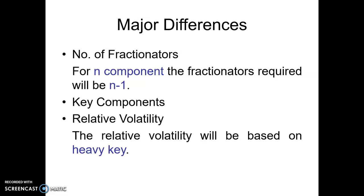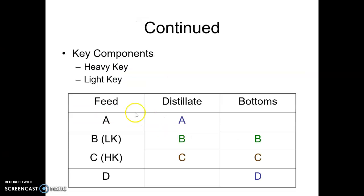One difference between multi-component and binary systems is the number of fractionators required. To separate a binary system into pure form, you require one column. For a ternary system with three components separated into pure form, you require two distillation columns — in the first tower you separate one species, and in the second you separate the remaining two. For four species you require three fractionators. In general, for N species, the number of fractionators required is N minus one. The second difference is the concept of key components, and relative volatility in a multi-component system is calculated with respect to the heavy key.